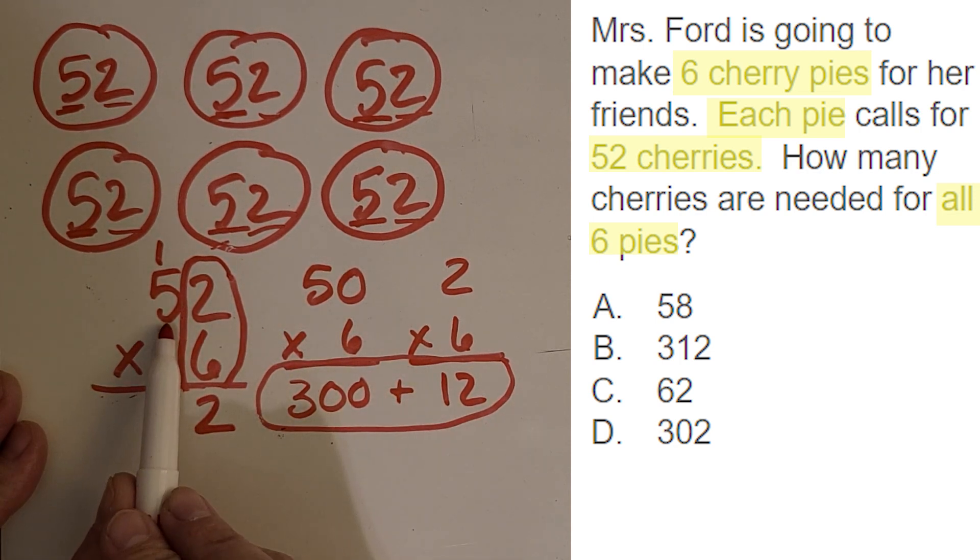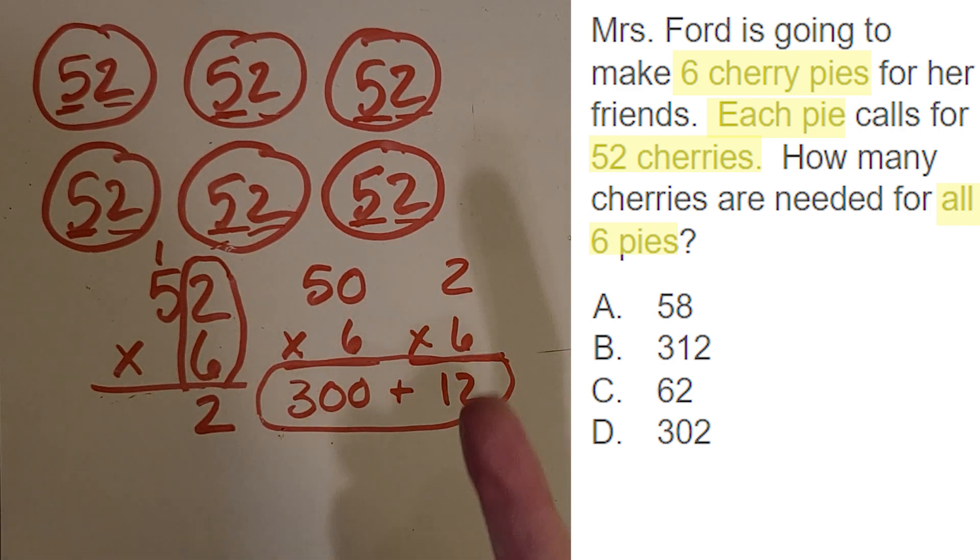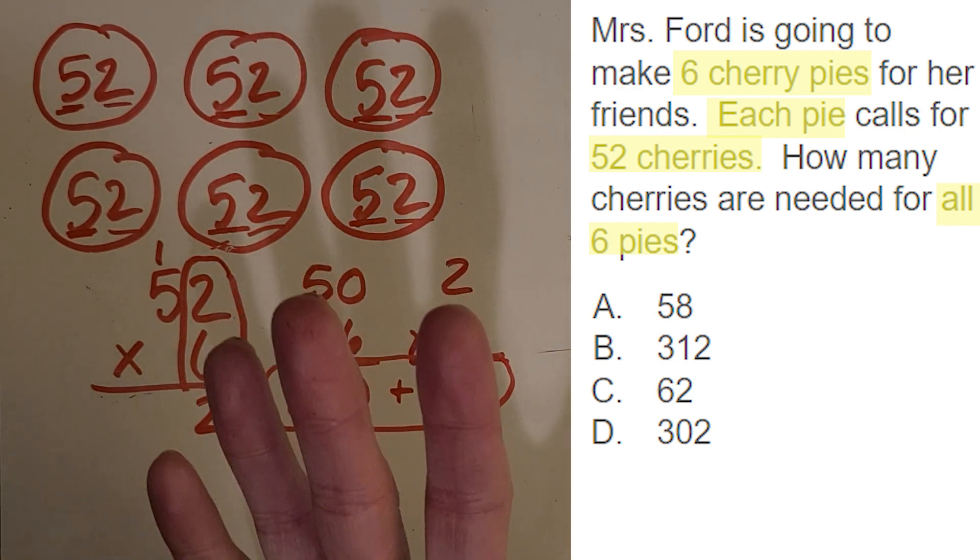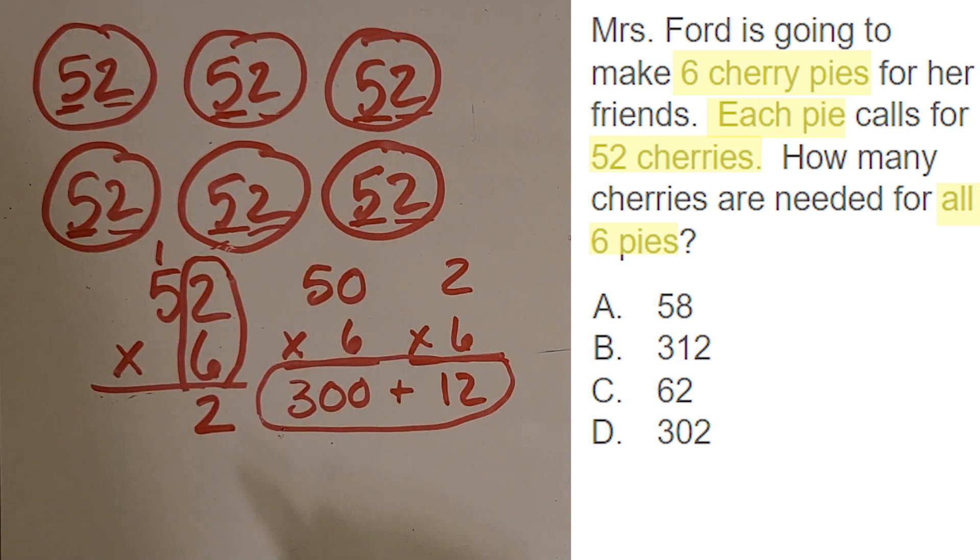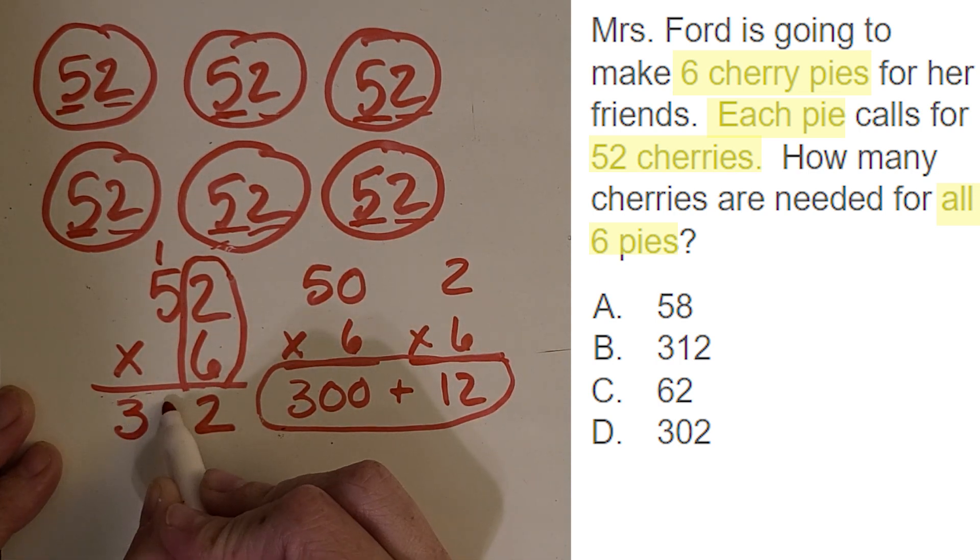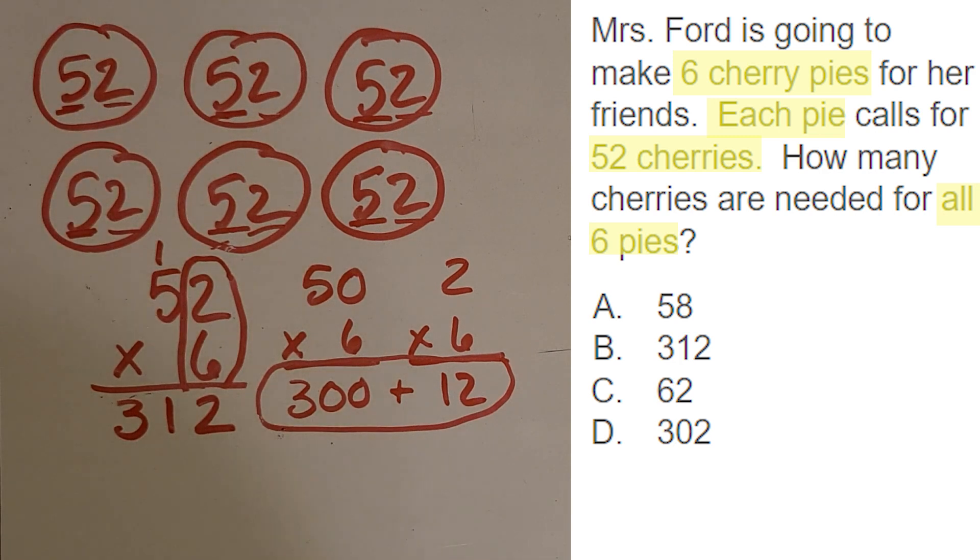And then 5 times 6. So 5, 10, 15, 20, 25, 30 plus that extra 1. You got it. It's 31. And it gets everything into the right place. So it's pretty awesome.